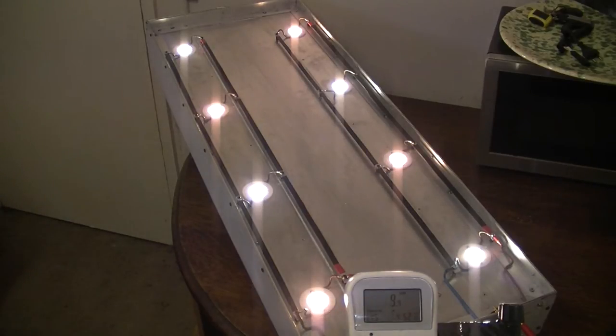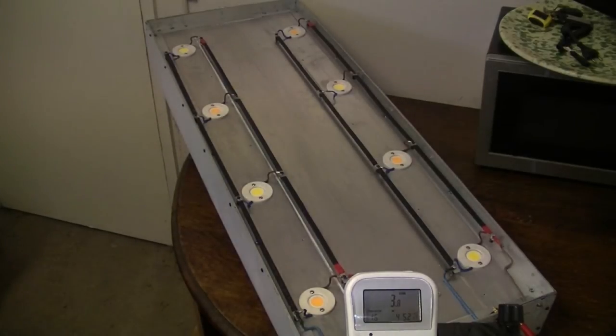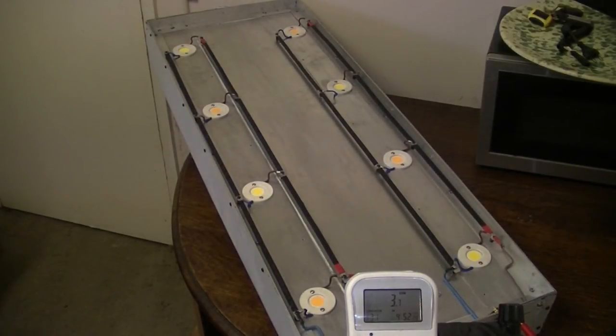The entire rig is running at nine watts. This supply takes three of those watts, so that's six watts between eight COBs - just slightly under one watt per COB. That's phenomenal.